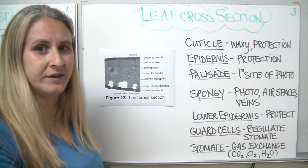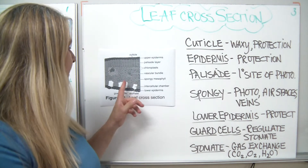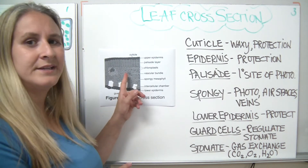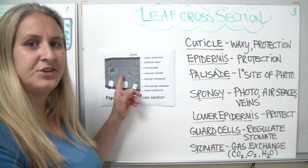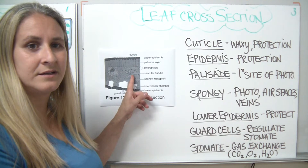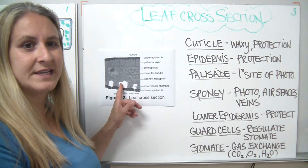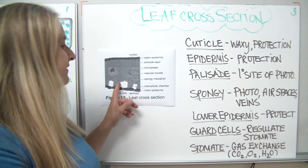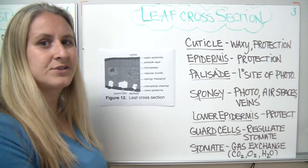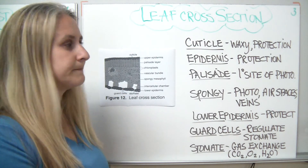A couple of things I want you to think about for tomorrow: why is it that the spongy layer contains the veins, and why does it have these air spaces conveniently placed right next to the guard cells and the stomates?